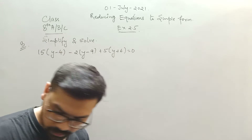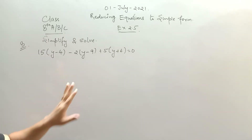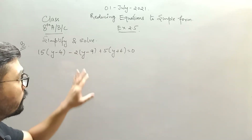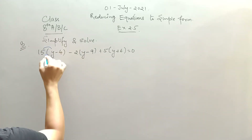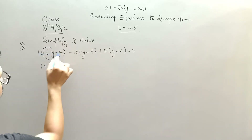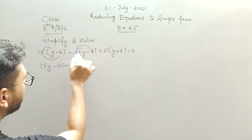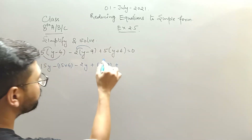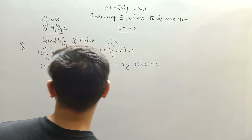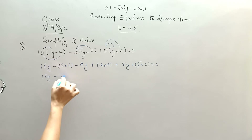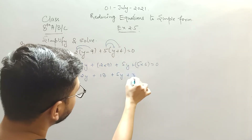Now the next question is question number 8. You need to simplify and solve — first simplify, then solve for the value of y. Multiply: 15 into y gives 15y, minus 15 into 4. Then multiply 2 with y, and minus plus 2 into 9, plus 5 multiplied by y, plus 5 multiplied by 6 equals 0. This gives 15y minus 16, minus 2y plus 18, plus 5y plus 30 equals 0.